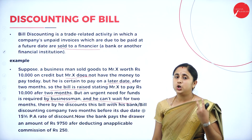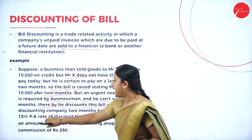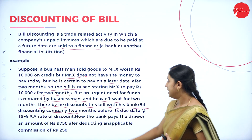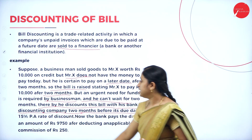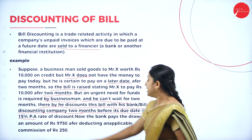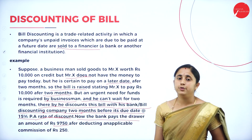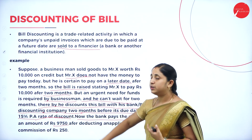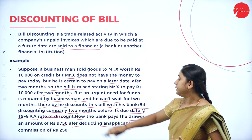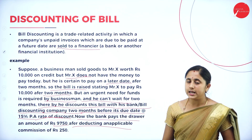For example, suppose a man sold goods to Mr. X worth rupees 10,000 on credit, but Mr. X does not have money to pay today. He requires two months to pay the money, so the bill is raised stating Mr. X to pay rupees 10,000 after two months. But the businessman has an urgent need for funds and cannot wait for two months, so he discounts this bill with his bank or bill discounting company. Before the due date, at a discount rate of 15% per annum, the bank pays the drawer an amount of rupees 9,750 — that is, after deducting the discount commission of rupees 250.